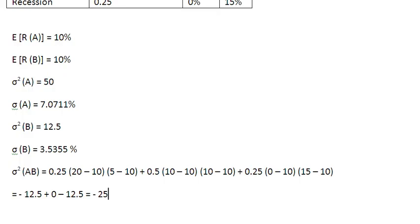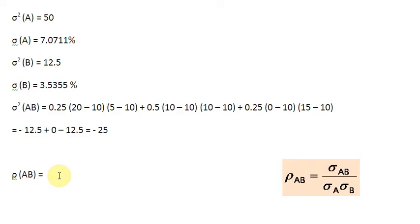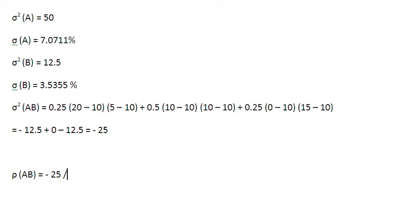This covariance can be used to find the correlation coefficient between asset A and B. The correlation coefficient simply scales the covariance between plus 1 and minus 1. We write rho of A and B — the Greek letter rho indicates correlation — and it equals the covariance of minus 25 divided by the product of the standard deviations of both assets.